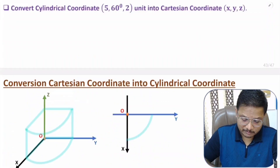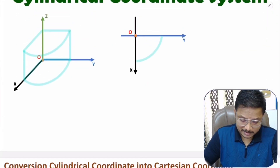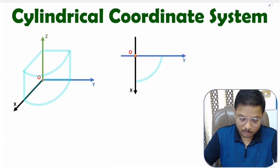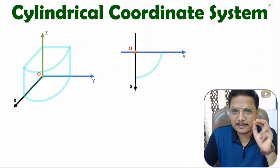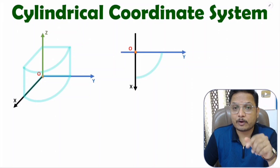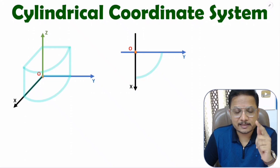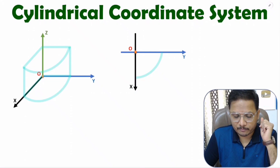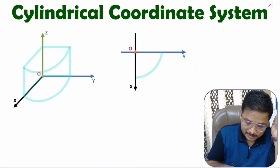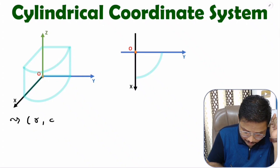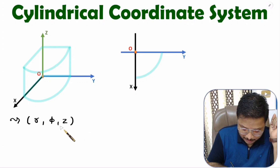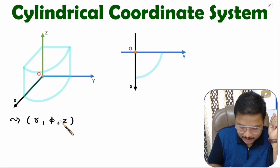So let us begin this session with the first agenda, that is basics of cylindrical coordinate system. First of all, one should know what is cylindrical coordinate system and what are the coordinates. With cylindrical coordinate system, we have coordinates r, phi and z, and we need to understand what is the meaning of these coordinates.